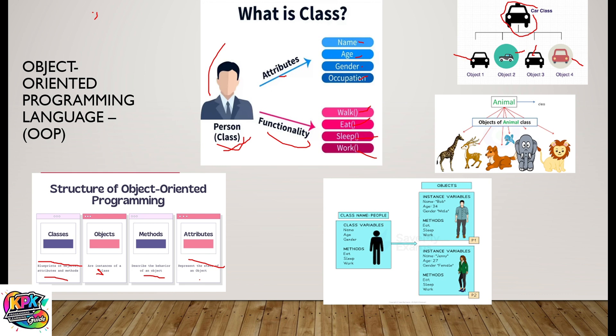Every object has what we call attributes. It could be the car color, whether it is a four-wheel drive, and the lighting system and seating inside. All of this contributes to what we call the attributes. Then the methods or functionalities are what the car does — so it has movement. All this makes up the functionality or the methods of that object.